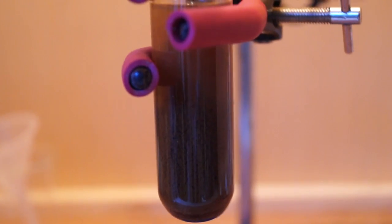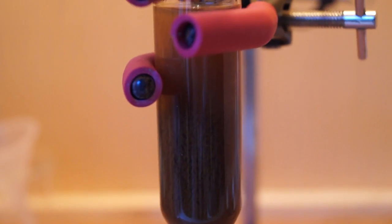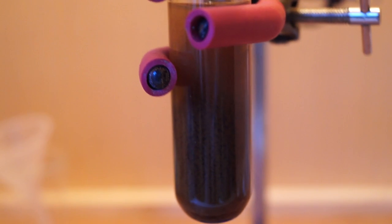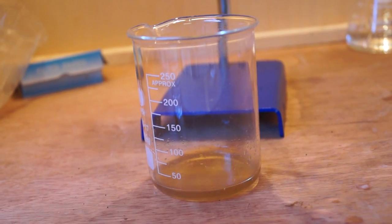After leaving the reaction for a while, I returned to see that the mixture had turned brown. I then proceeded to filter the liquid from the excess potassium permanganate that had not reacted. I was left with a yellow-brown colored mixture.